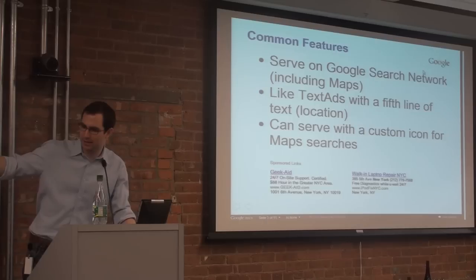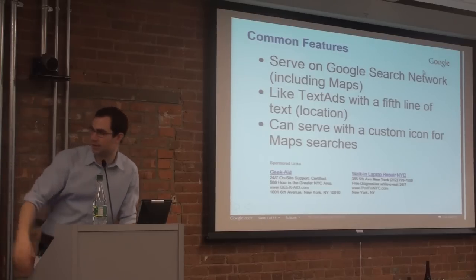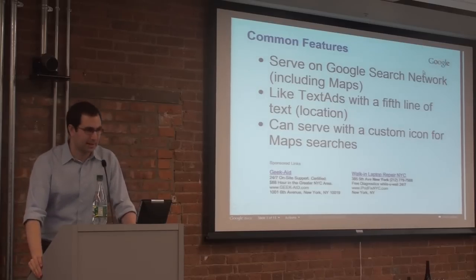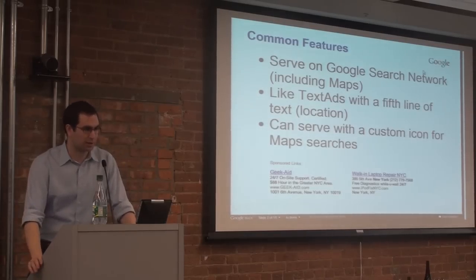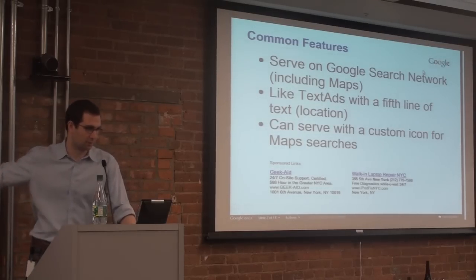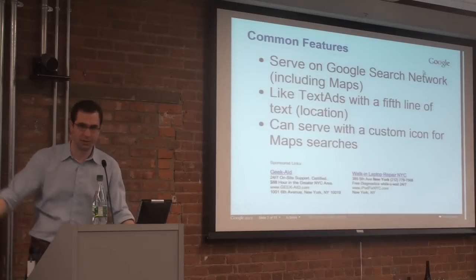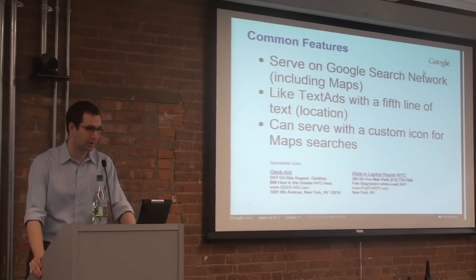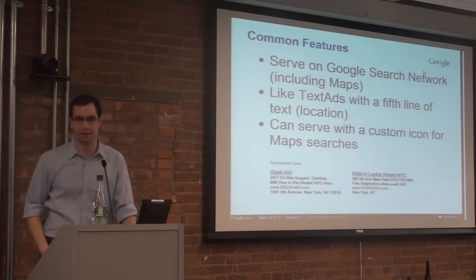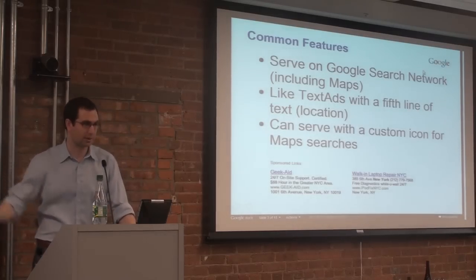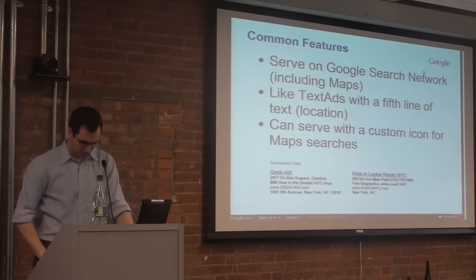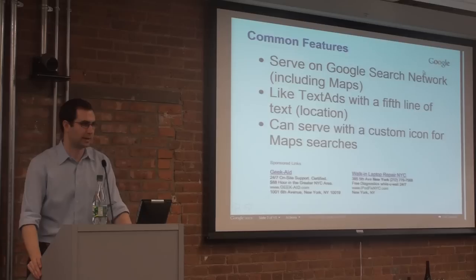When they're not displayed as an icon on the map, they basically look like a regular text ad. You can see two examples of local business ads there. Local business ads and local ad extensions both serve on proper Google search results on Google.com as well, where they look just like regular text ads except with that fifth line of text. If you enter a city only, it just shows New York, New York. If you enter an entire street address, it shows up with the entire street address. So that really helps customers recognize that you're close by to them when they search.